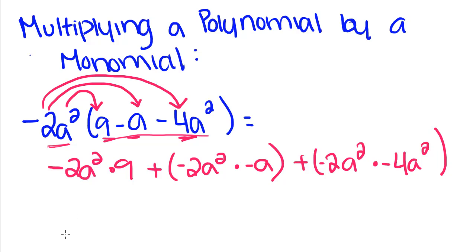We're still going to have the same amount of terms that we started with, we're just going to have different ones. Negative 2 times 9 is negative 18, so we have negative 18a squared plus negative 2 times negative 1 is going to be a positive 2a cubed. When we multiply powers, we add them. This is an understood 1 up here, so we take 2 plus 1 and we get a to the third.